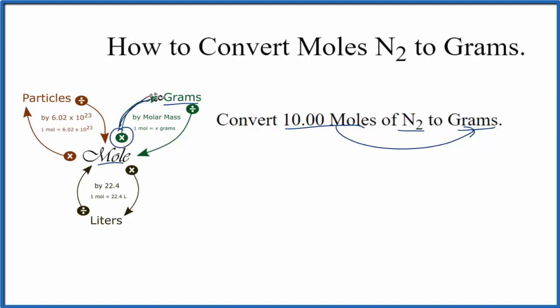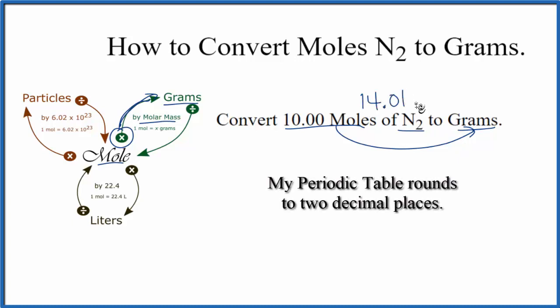So moles to grams, we multiply by the molar mass. So we need to find the molar mass for N2. We do that by going to the periodic table. Nitrogen is 14.01 grams per mole, and we have two of these nitrogen atoms.